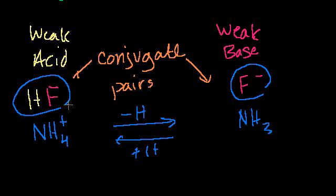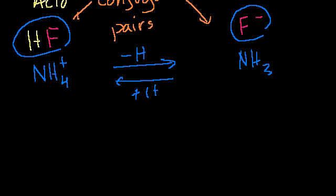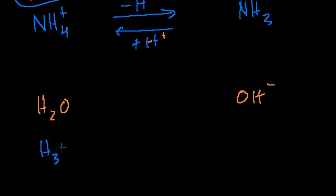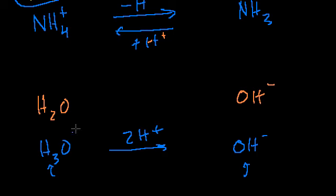No more than one hydrogen — on a test, if someone shows you two molecules separated by two hydrogens, those would not be conjugate pairs. For example, H2O and OH minus are conjugate pairs, because OH minus is exactly H2O minus one proton — one molecule is keeping the electrons, so it has a negative charge. But H3O plus and OH minus are not conjugate pairs; there's a two-proton difference. H3O plus and H2O, however, are a conjugate pair.